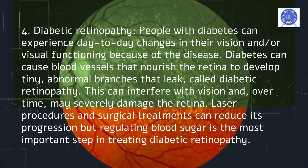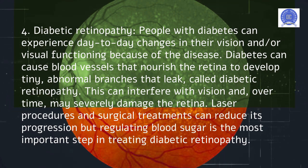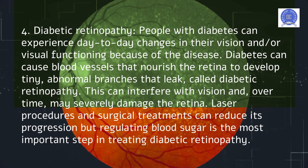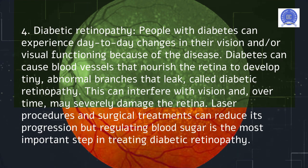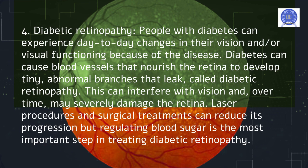People with diabetes can experience day-to-day changes in their vision and visual functioning because of the disease. Diabetes can cause blood vessels that nourish the retina to develop tiny, abnormal branches that leak, called diabetic retinopathy. This can interfere with vision and, over time, may severely damage the retina. Laser procedures and surgical treatments can reduce its progression, but regulating blood sugar is the most important step in treating diabetic retinopathy.